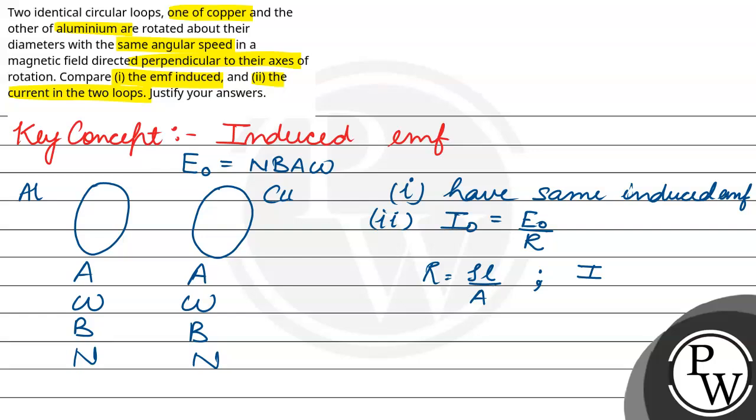And the current produced in the two coils is inversely proportional to resistivity. The resistivity of copper is less than the resistivity of aluminum. So the induced current in copper will be greater than the induced current in aluminum. Hope you understood it well, best of luck.